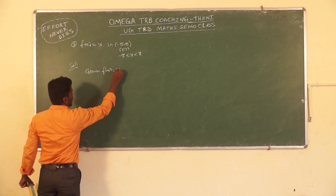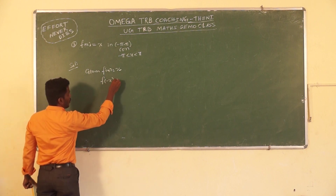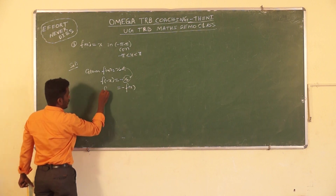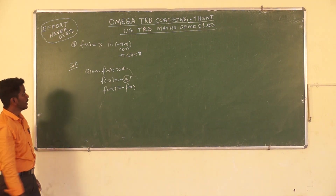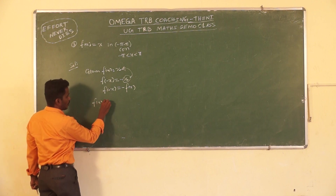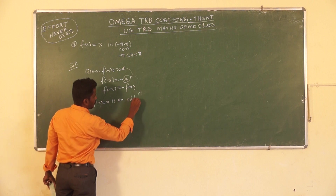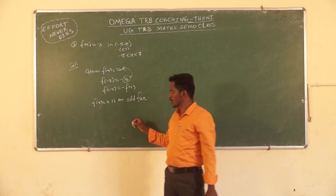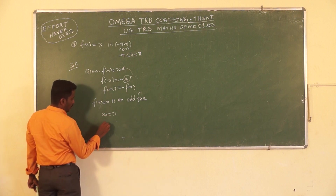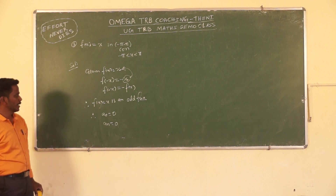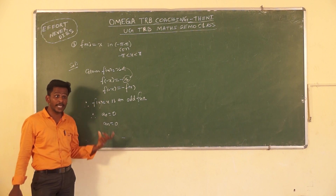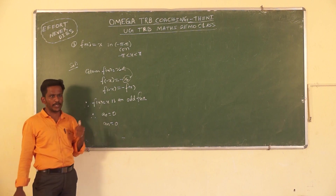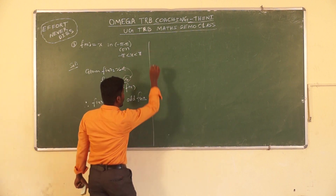Since f(−x) = −x = −f(x), the given function f(x) = x is an odd (R) function. For an odd function, a₀ = 0 and aₙ = 0. For an even function, bₙ = 0. Since f(x) = x is odd, we only need to compute bₙ.